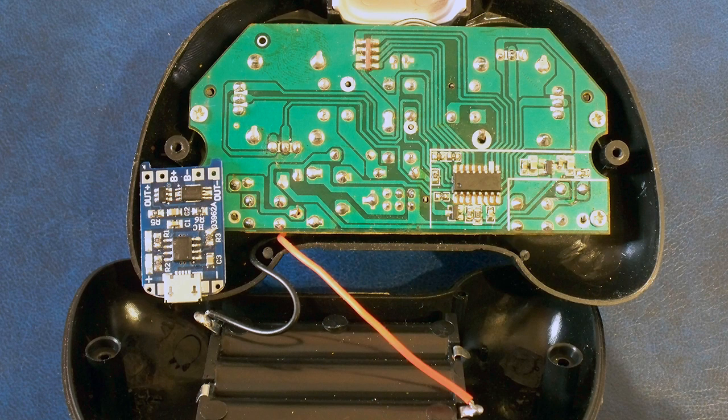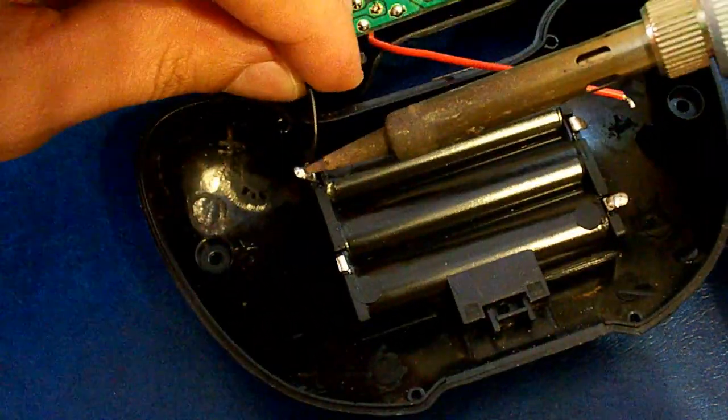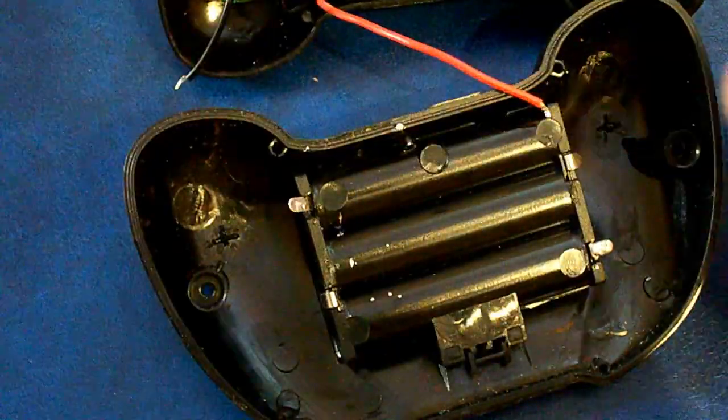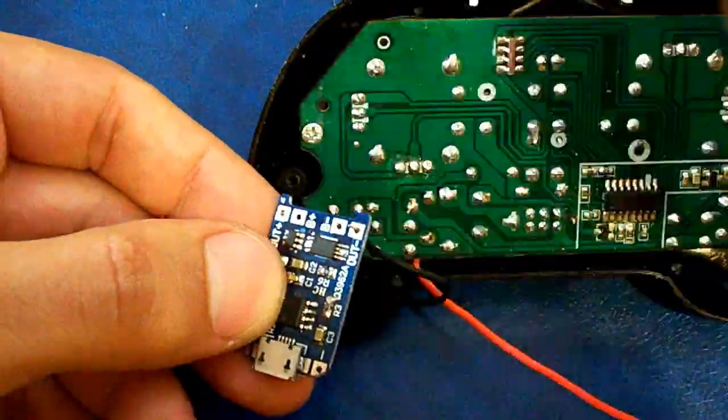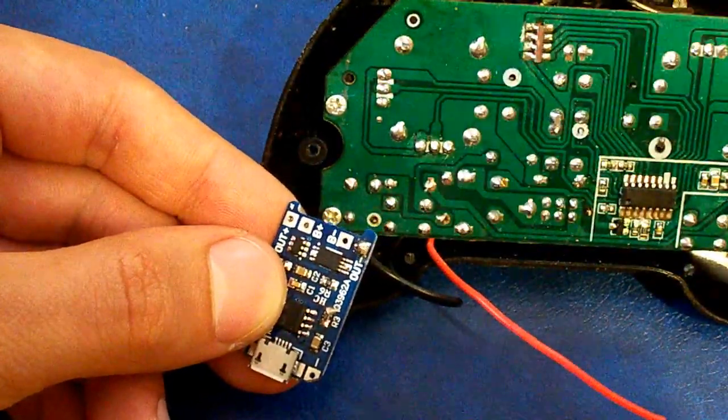Then I unsoldered red and black wires from battery holder and soldered them to the out plus and out minus contact pads of the charging board respectively.